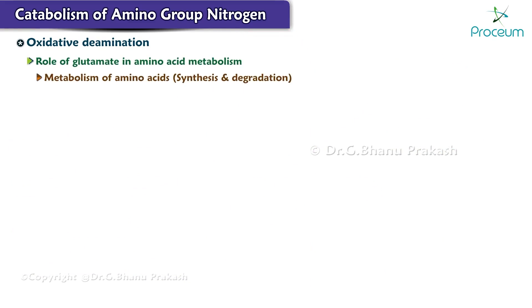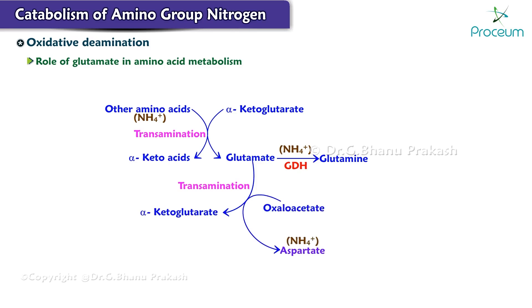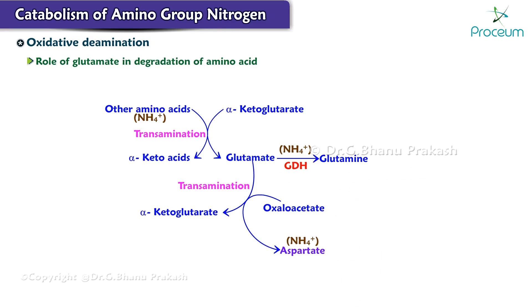Glutamate plays a pivotal role in the metabolism of amino acids — it is involved in both their synthesis and their degradation. Glutamate obtains its nitrogen either from other amino acids by transamination or from NH4+ by the glutamate dehydrogenase reaction. Transamination reactions then serve to transfer amino groups from glutamate to alpha keto acids to produce their corresponding amino acids. When amino acids are degraded and urea is formed, glutamate collects nitrogen from other amino acids by transamination reactions.